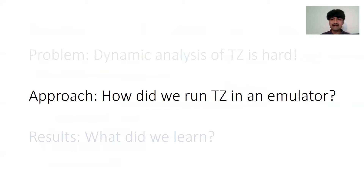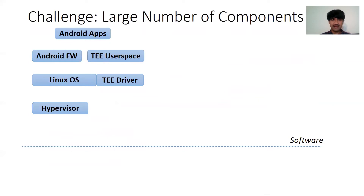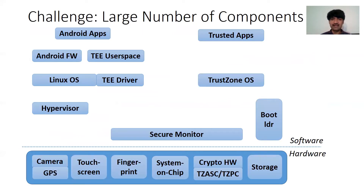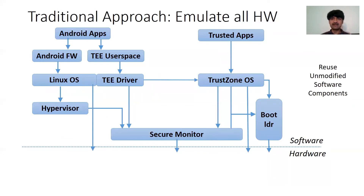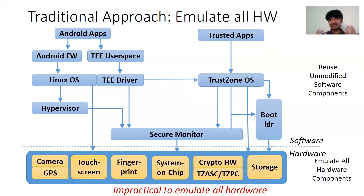How did we actually run TrustZone in the emulator? There are a large number of components on typical smartphones: normal world software components, secure world software components, and a wide variety of hardware components with dependencies between all of them. The traditional approach to emulation is to put all software or firmware into the emulator and emulate any hardware it requires. This would mean emulating all the hardware components shown in yellow, and this is very impractical — even just the storage controller is very difficult to emulate given how quickly it changes and how intricate it is.